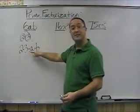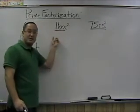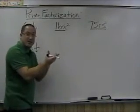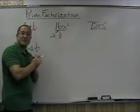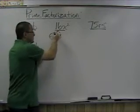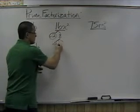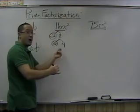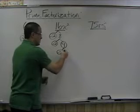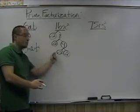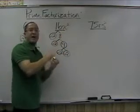Now let's do 16x². First, break down 16: 16 = 2 × 8, then 8 = 2 × 4, and 4 = 2 × 2. So 16 = 2 × 2 × 2 × 2. Since x² means x times x, the prime factorization of 16x² is 2⁴ × x × x, or 2⁴ × x².